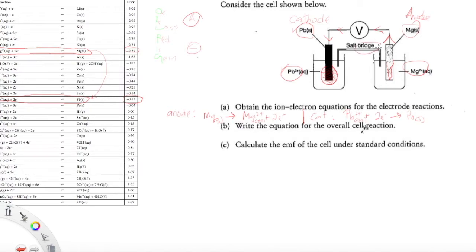Remember, the function of the salt bridge maintains the neutrality of the cell. Now for the overall cell reaction — we combine the two equations, making sure the number of electrons are the same and cancel them off. In this case, we do not have to multiply any half-equation because they both involve two electrons. So it becomes: Mg(s) + Pb2+(aq) → Mg2+(aq) + Pb(s).